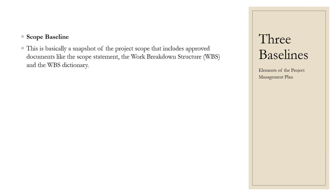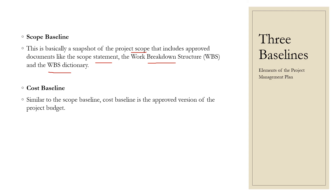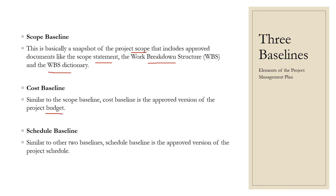The scope baseline is the snapshot of the approved project scope, and it contains three documents: the scope statement, the work breakdown structure (WBS), and the WBS dictionary. The cost baseline is the approved version of the project budget — how much budget has been approved for your project. The schedule baseline is the approved version of the project schedule — whatever schedule has been approved by the project team. These three baselines are all part of the project management plan.